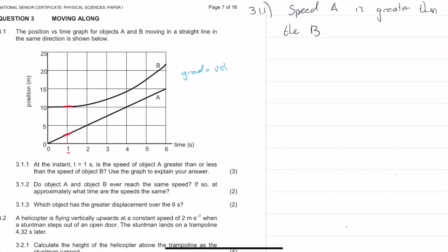Let's just say that the speed of B. The reason is because we know that our speed is equal to our gradient, and the gradient of A is greater than the gradient of B. And we get ourselves three marks for that.